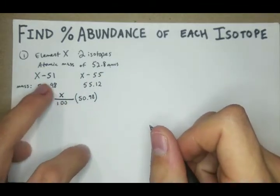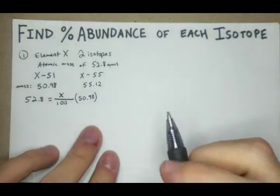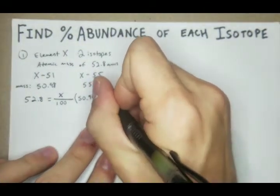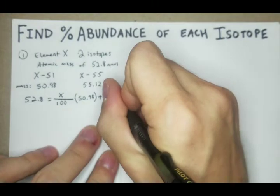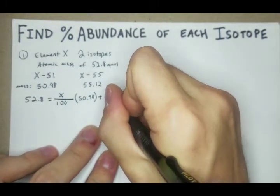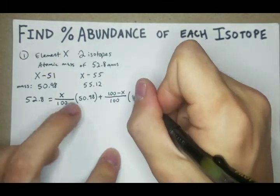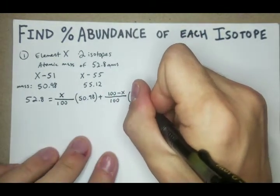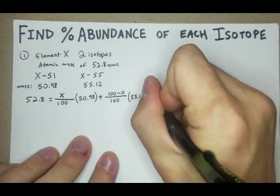The mass of X-51 isotope. So then we'll say plus 100 minus X over 100 times the other isotope, which in this case is 55.12.